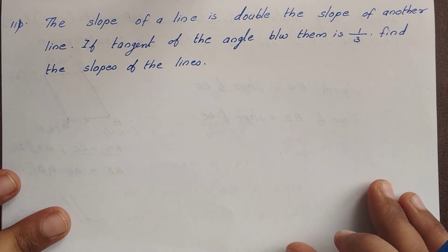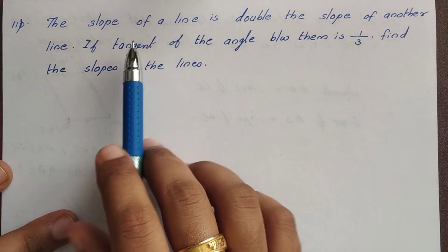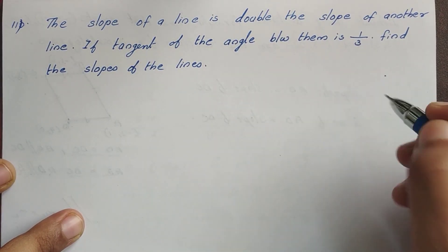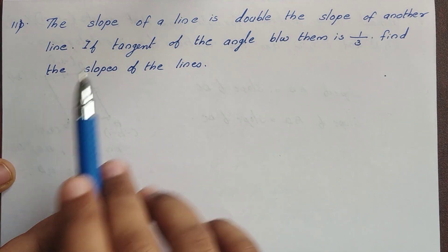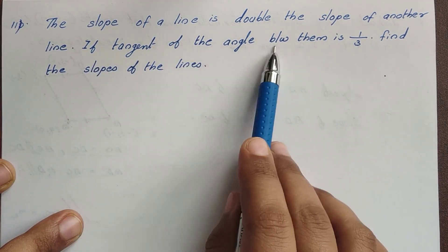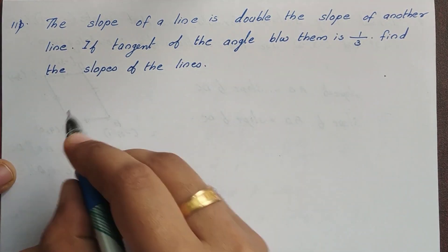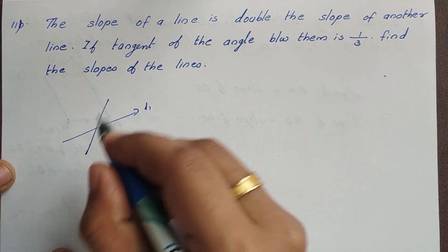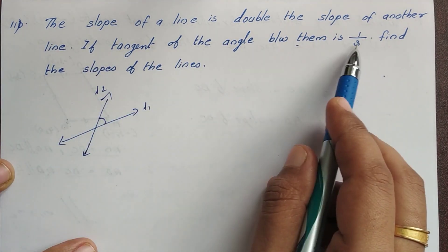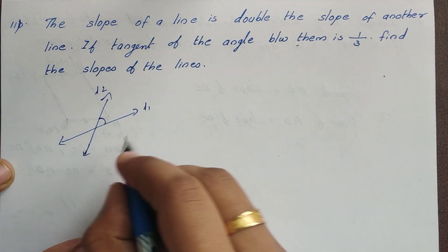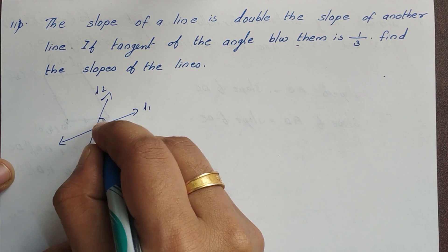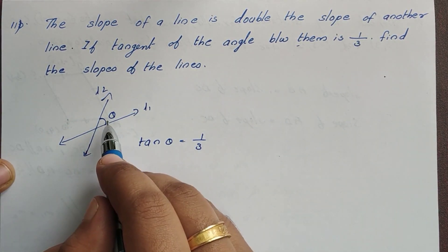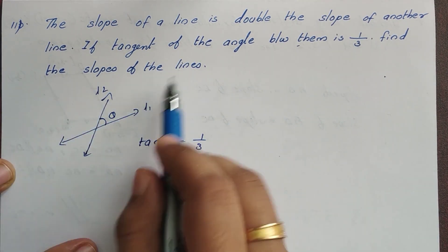Hi students, this is the next problem — GM 11th problem. The slope of a line is double the slope of another line. If tangent of the angle between the two lines is 1 by 3, that is tan theta equals 1 by 3. Find the slope of the line.